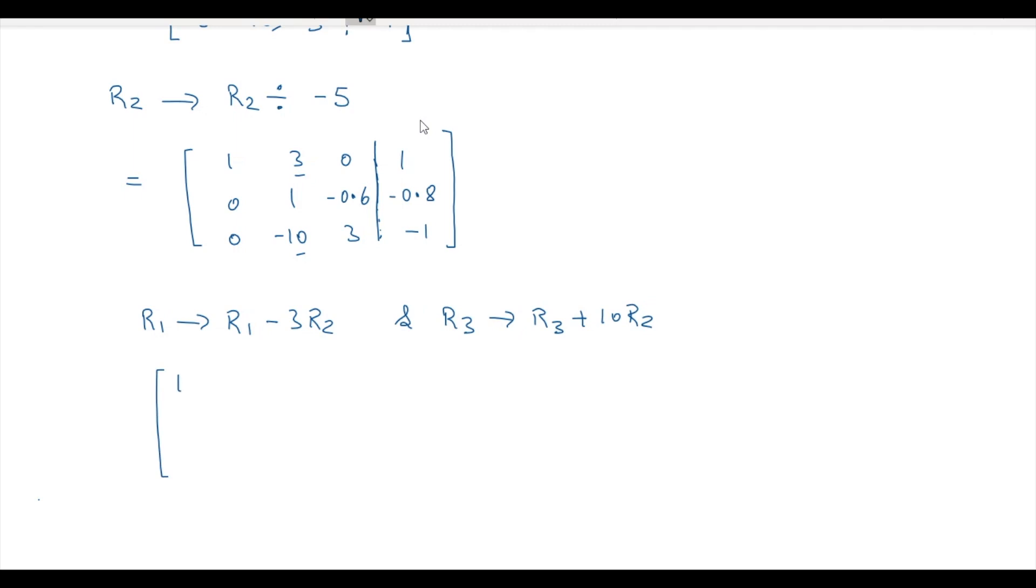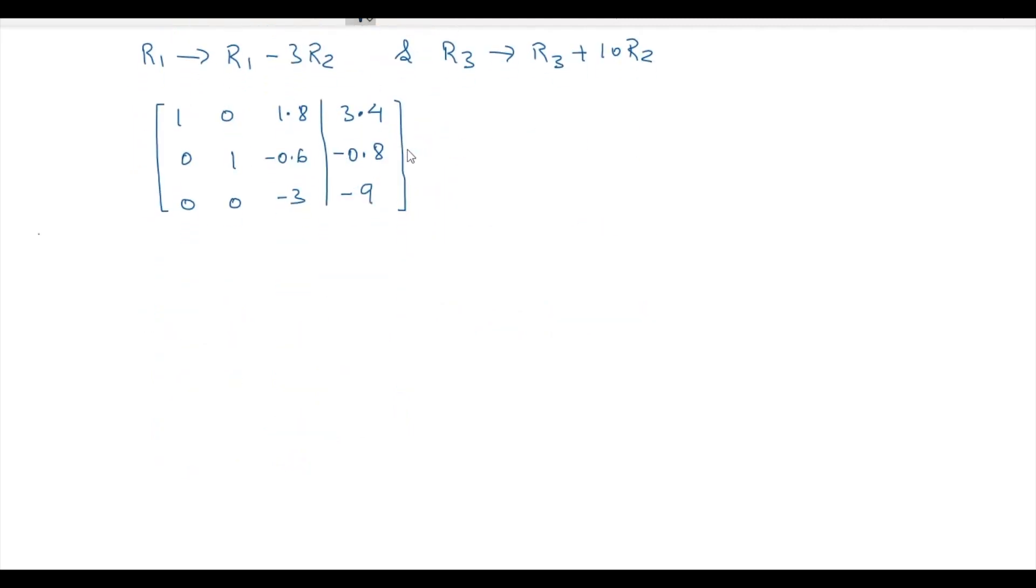So it is going to be [1 0 1.8 | 3.4; 0 1 -0.6 | -0.8], the second row will remain as it is and third row [0 0 -3 | -9]. Our column 2 is also ready now.